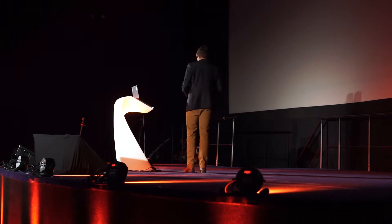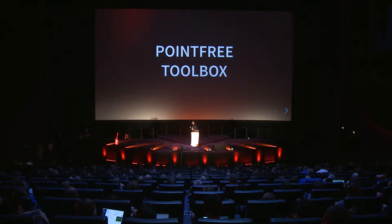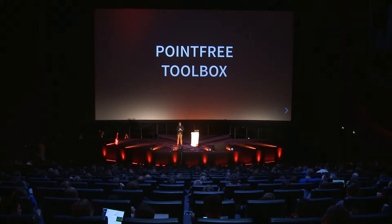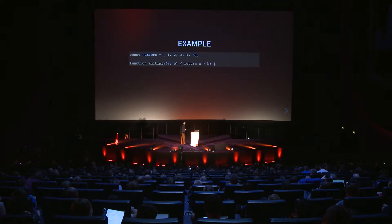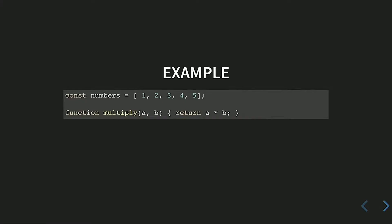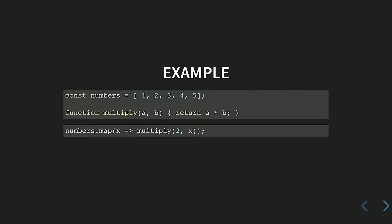Before we talk about real-world examples of point-free programming, I need to show you a couple of tools we'll need. The first tool is called partial application. Here's a quick example: we have an array of numbers and a simple function called multiply that multiplies two numbers, and our task is to double each number in the array — which we can do very easily with map.